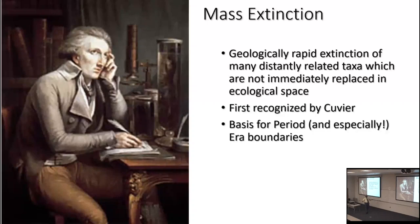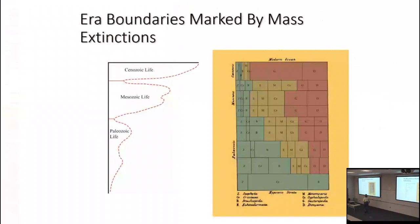A consequence of mass extinction is that the world is left ecologically impoverished afterward — many niches are unoccupied for a while. It takes time for things to re-evolve to fill those spots. In background extinctions, another form normally comes in to replace the lost one right away, possibly through competitive replacement. These transformations were used as the basis for geological period boundaries — especially the big era boundaries between the Paleozoic and Mesozoic (the Permo-Triassic) and between the Mesozoic and Cenozoic.